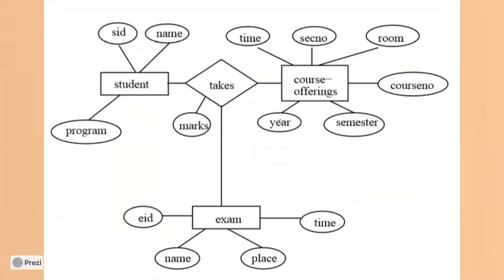There are three entities: a student, a course, and an exam. There will be a student who appears for a course, and that same course has an exam. The student has a student ID and student name. The course has a time, section number, room, course number, semester, and year.